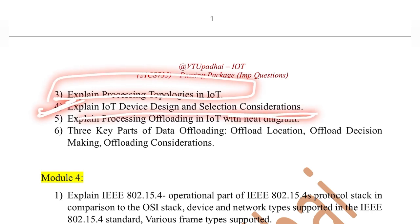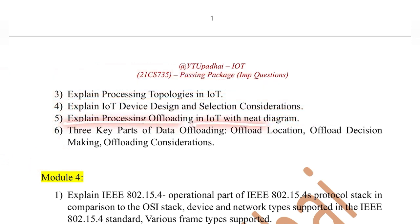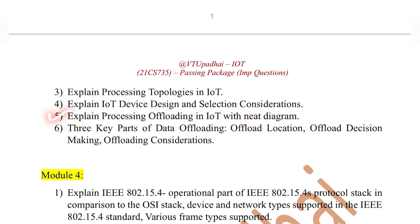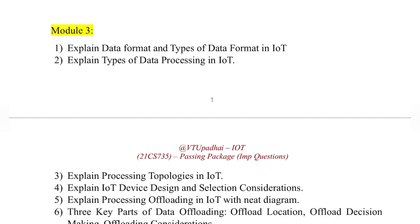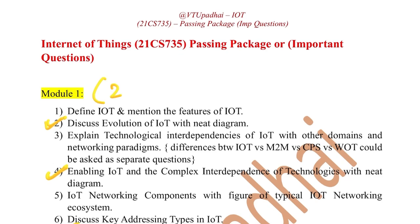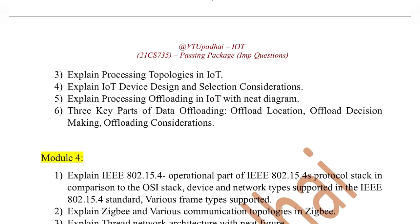Then we have IoT design and selection considerations — a very easy five-mark question. Then processing offloading with a need diagram: two types, further divided into remote and collaborative. Don't miss this out as it is a very important question. Next, three key parts of data offloading come under offloading: offload location, offload decision making, and offload considerations — three subdivisions. These could be merged with other questions. So first, second, and third modules each carry 20 marks — cover these three and you'll have your passing package.